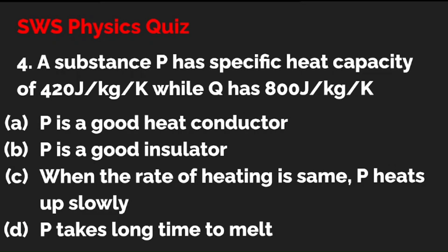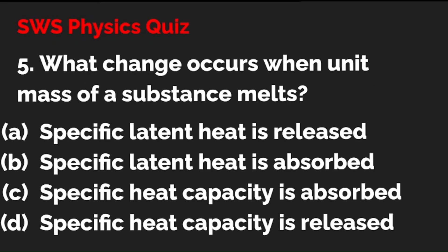Question 4: A substance P has specific heat capacity of 420 joules per kilogram Kelvin, while Q has 800 joules per kilogram Kelvin. The options are: A — P is a good heat conductor; B — P is a good insulator; C — when the rate of heating is the same, P heats up slowly; D — P takes a long time to melt. The correct option is A — P is a good heat conductor.